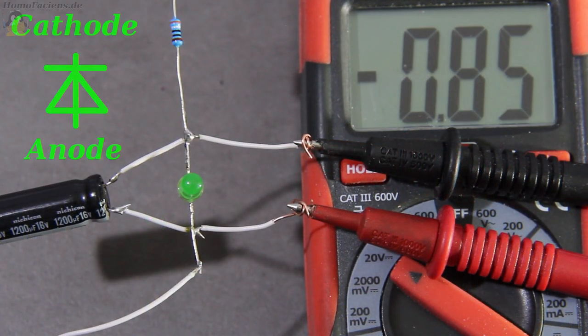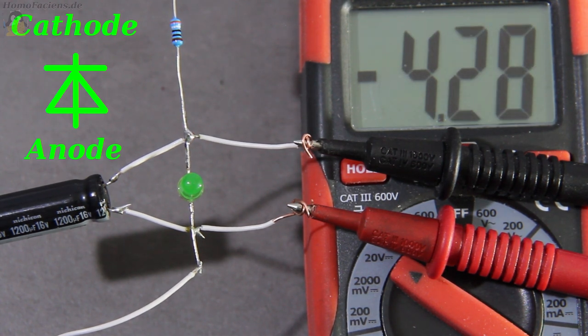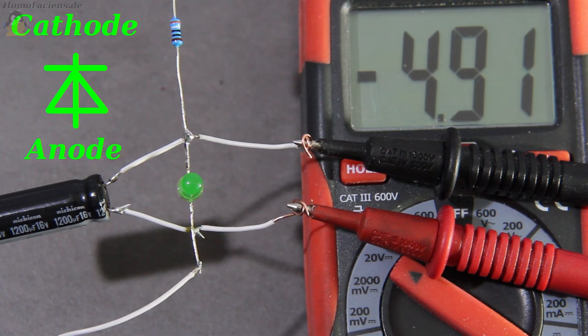If the polarity is reversed, the LED doesn't light up even at a significantly higher voltage. Here it is almost minus 5V between anode and cathode.